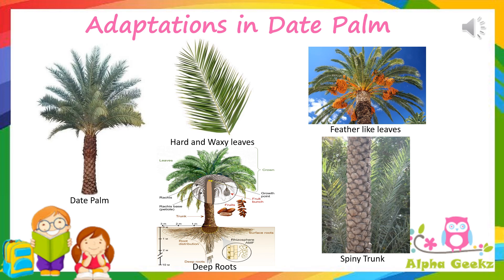Adaptations in date palm: date palms have a thin layer of wax around the leaves that prevents them from drying out. The leaves grow quickly and get hot fast, making them less appealing for animals to eat. The formation of leaves at the top provides shade to the trunk, so less water is lost due to evaporation. Deep roots reach far down into the ground to absorb water and spread wide to absorb surface water. The palm trees store starch in their trunks to help their leaves grow, and palms have spines on their trunk and leaves for protection against predators.